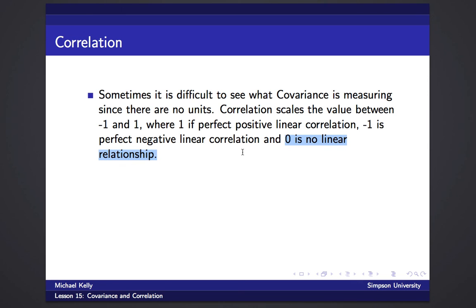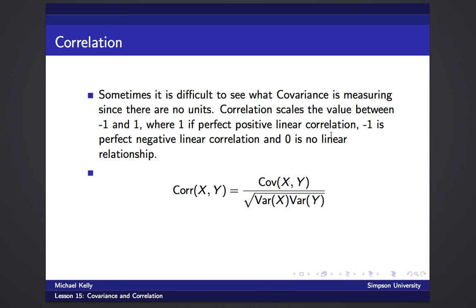There's no linear relationship if X and Y are independent, but also if data points form the shape of a circle — a circle isn't linear but it's not independent either, because knowing something about X tells us something about Y. The correlation formula scales covariance to be between -1 and 1 by dividing the covariance of X and Y by the square root of Var(X) times Var(Y), which is equivalent to dividing by the product of their standard deviations.